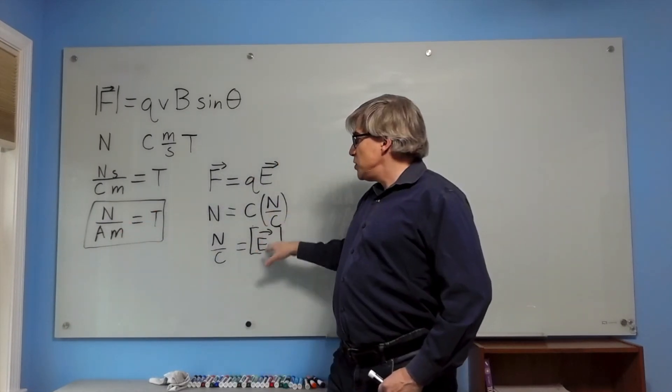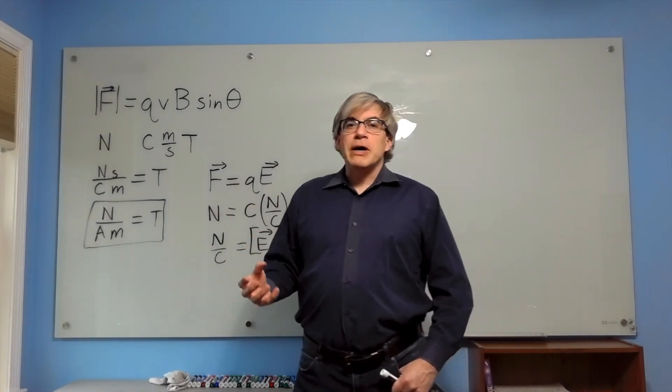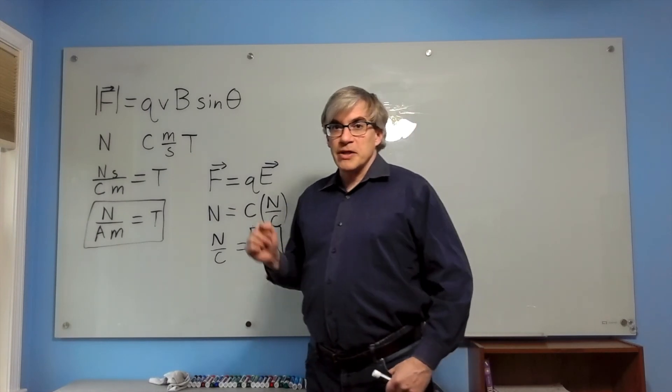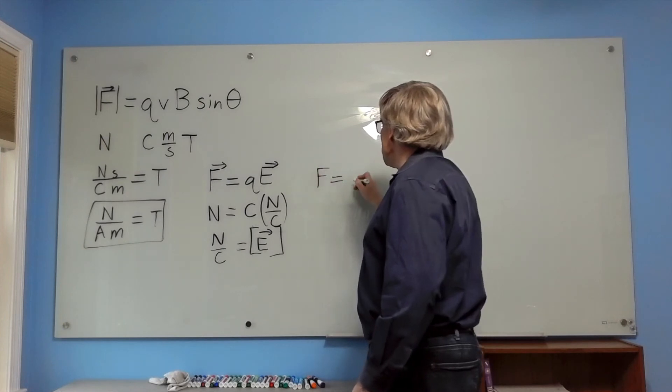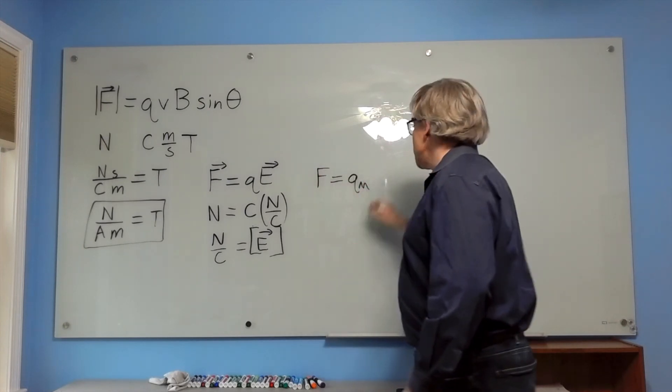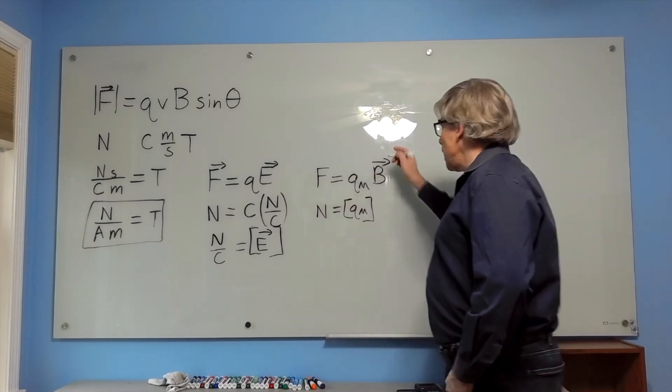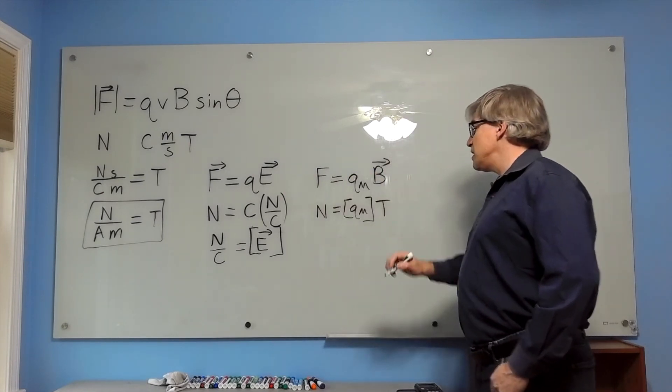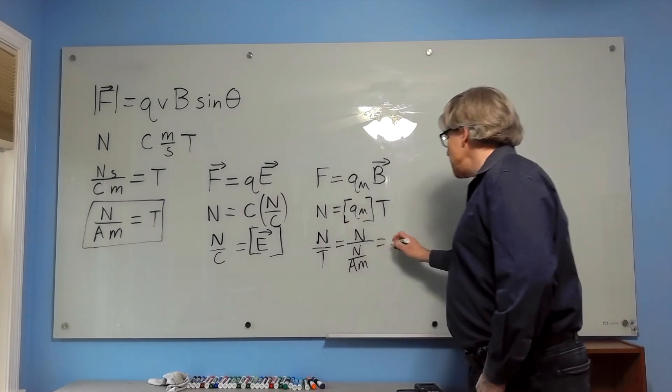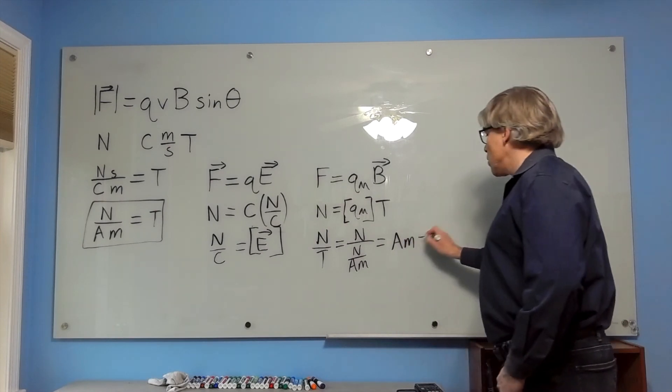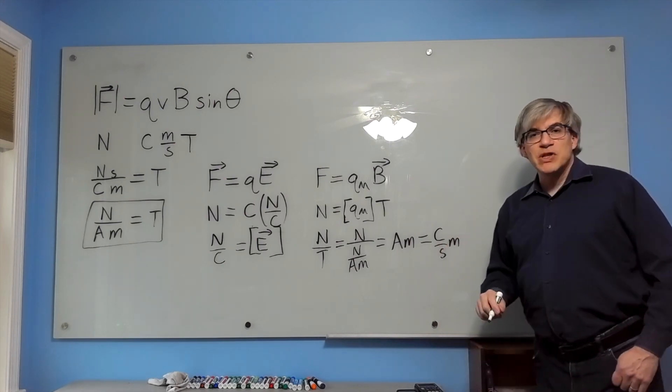Suppose we knew that electric field was newtons per coulomb and force was in newtons. We could figure out what a coulomb is. And that's the trick we're going to do with a magnetic monopole. We're going to use force equals magnetic charge times magnetic field. And since force is in newtons and magnetic field is in Tesla, Newton per Tesla would be the units of magnetic charge. We end up with ampere times meter, or coulomb per second times meter. So it's like electric charge times a velocity.